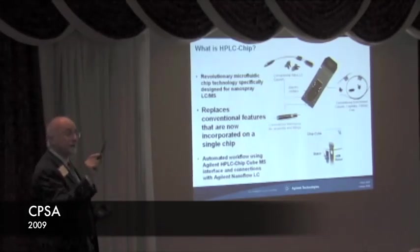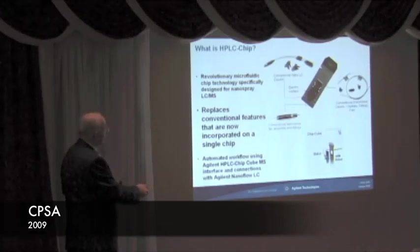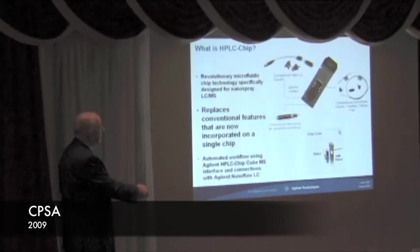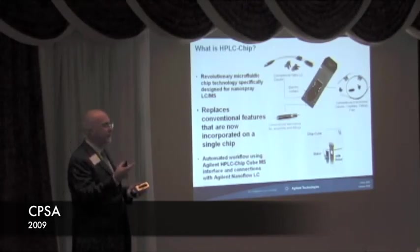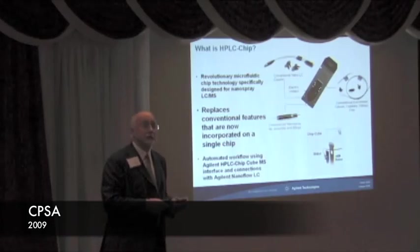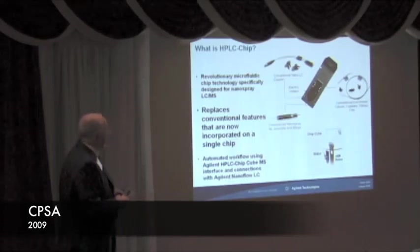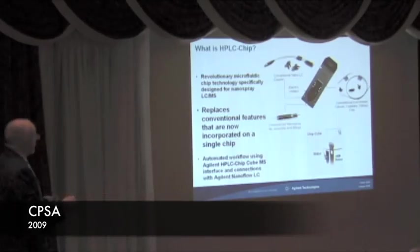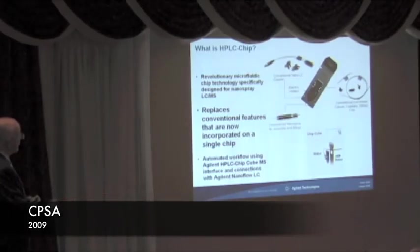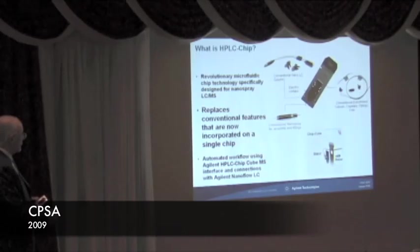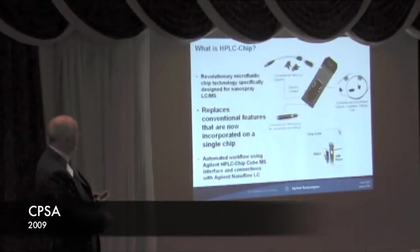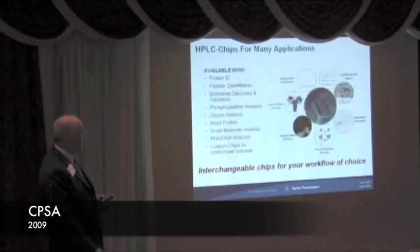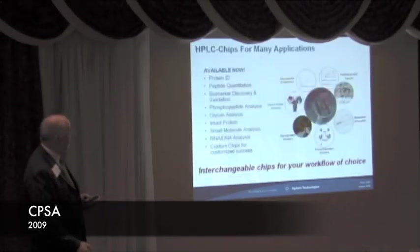This is implemented through the use of the HPLC chip cube, which is essentially an ion source on the front of our mass spectrometers. This device provides very high precision of reproducibility of retention time and abundance, and allows for automated workflows.